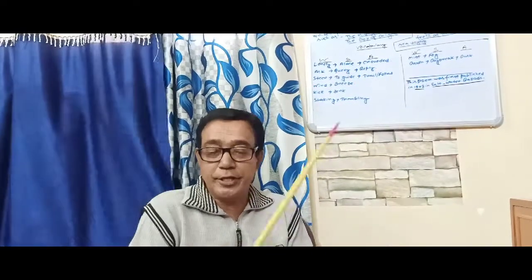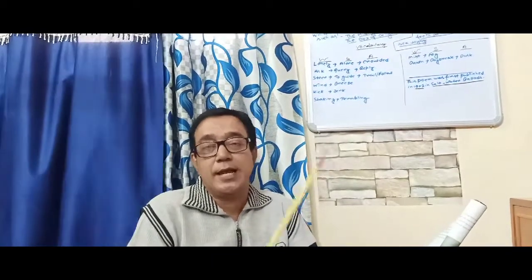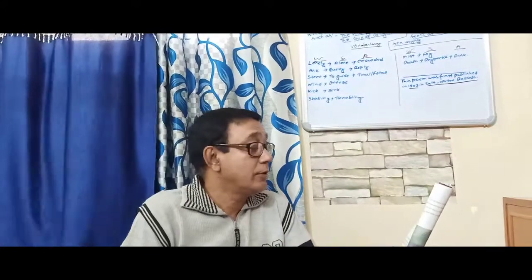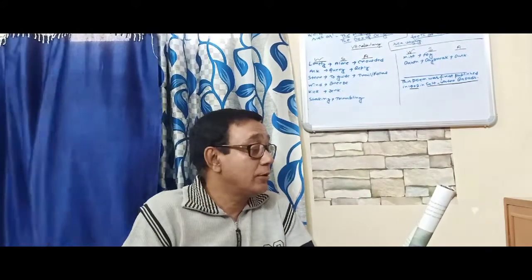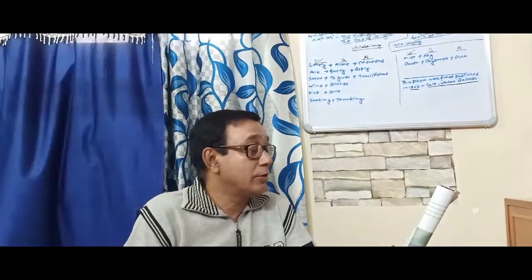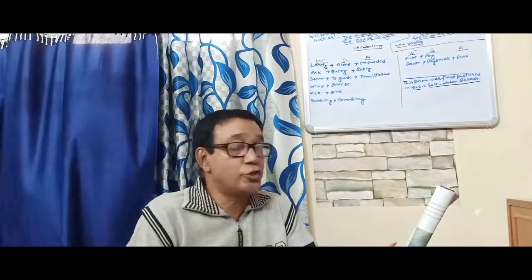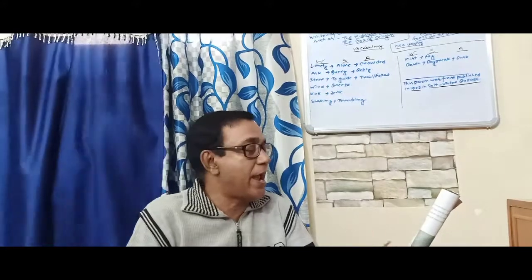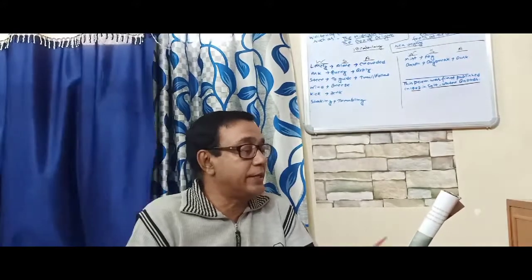The poet has employed poetic devices such as assonance, anaphora, and repetition to decorate and embellish his poem. This is all about the first section of the poem, which clearly brings out the quest — the strong passion for nature.